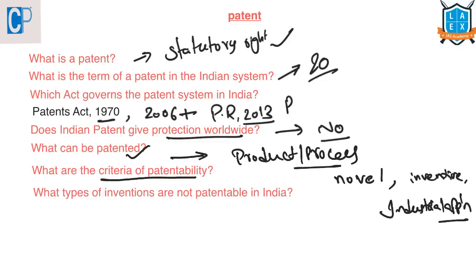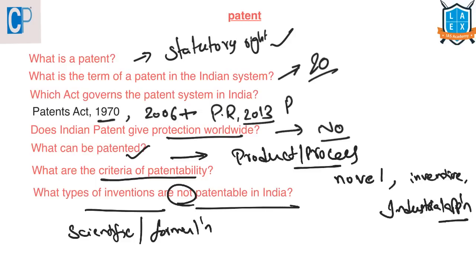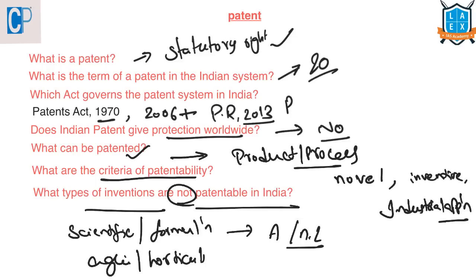What types of inventions are not patentable in India? A discovery of a scientific principle or formulation of an abstract theory, or discovering a living thing or non-living substance occurring in nature, will not be patented. A method of agriculture or horticulture will also not be patented. A mathematical or business method or a computer program cannot be patented. A literary, dramatic, musical or artistic work, or any cinematographic works and television productions cannot be patented. A scheme or rule or method of performing a mental act or a method of playing a game cannot be patented.